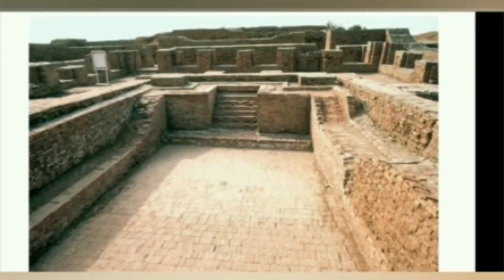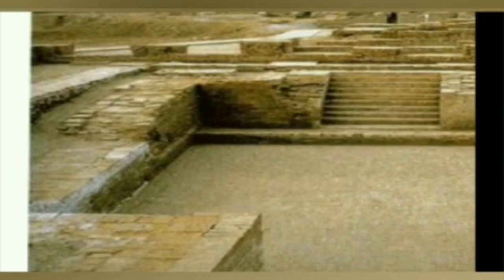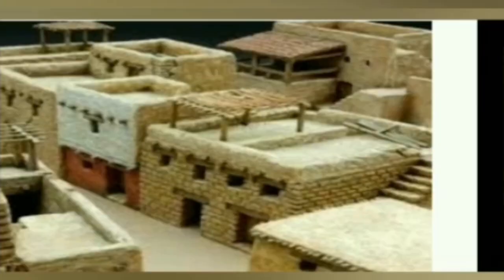Water from the adjacent well was used to fill the pool with fresh water, and an outlet in a corner was used to drain the used water. The lower town was generally the eastern part of the city.